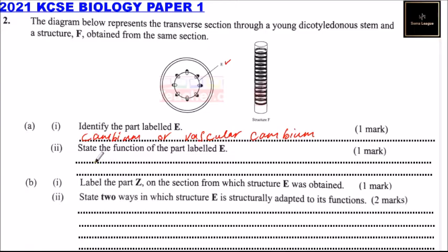Roman numeral two: state the function of the part labeled E. This is the part labeled E which we have called the cambium. This is for secondary growth of the plant.